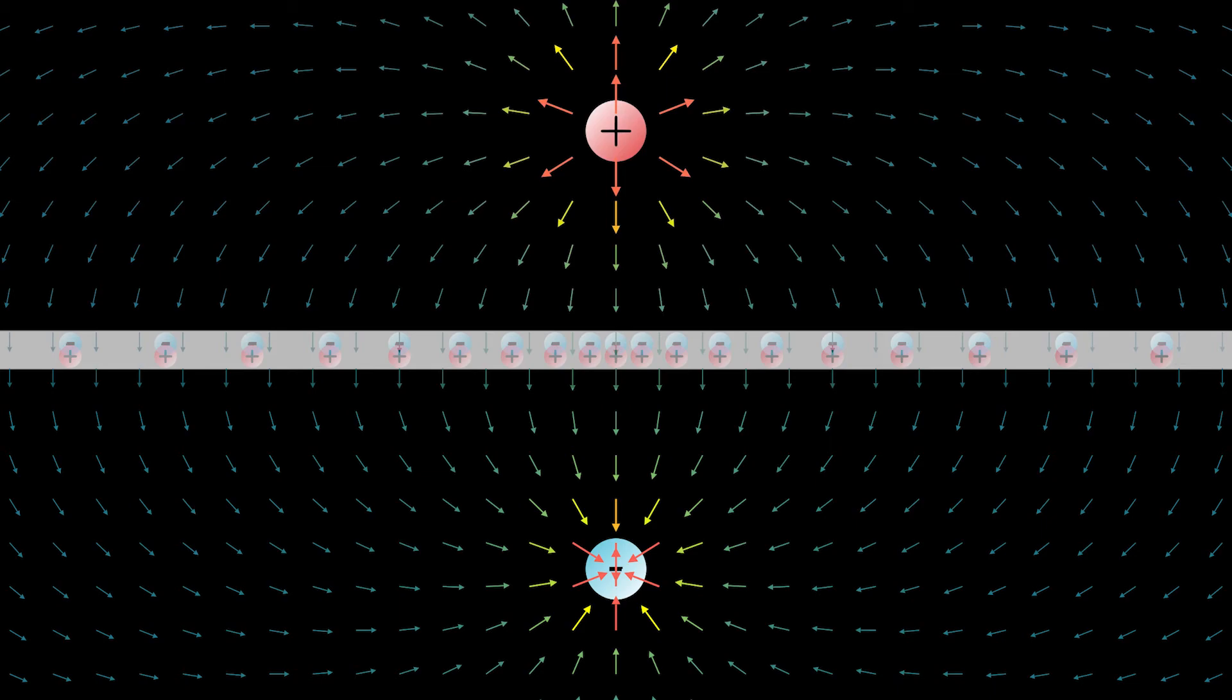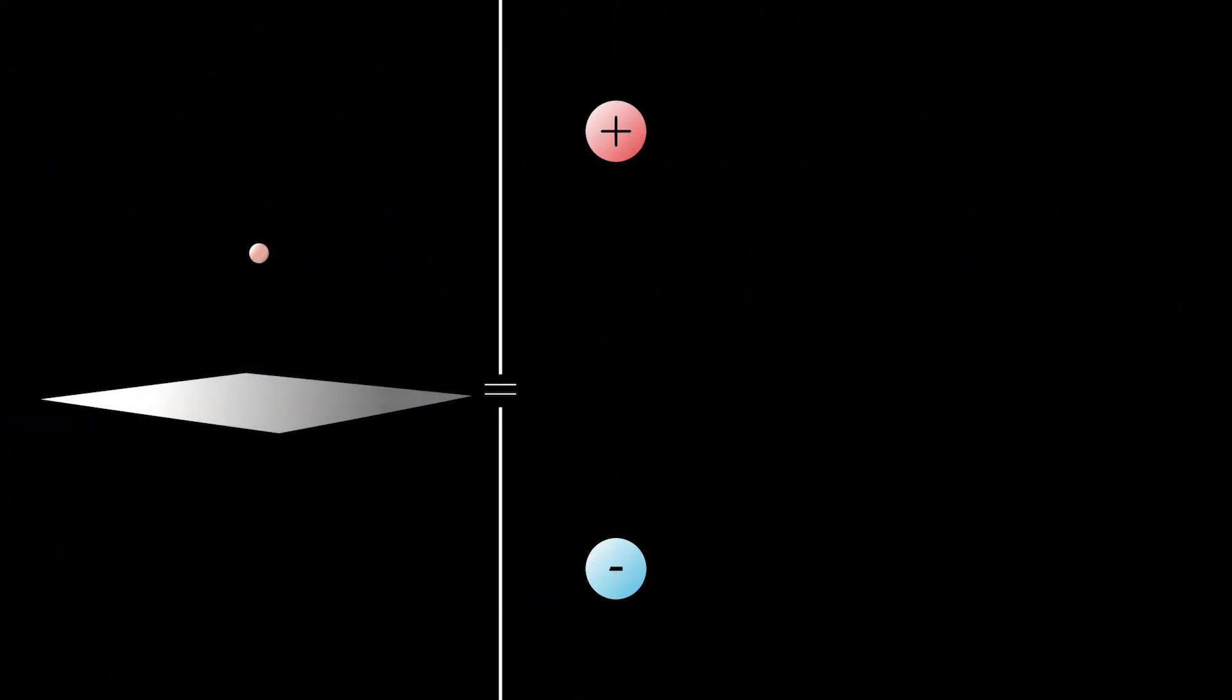Now, what happens with the plate? Well, we can see all the charges cancel since it's perfectly symmetric. So our problem of finding the force between the conducting plate and the charge is completely equivalent to this new problem of two point charges, which we definitely know how to handle. The force is just given by Coulomb's law.